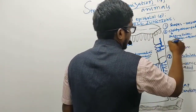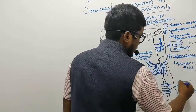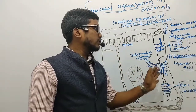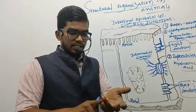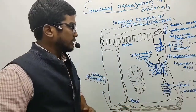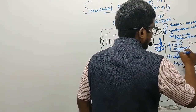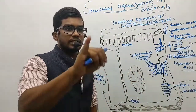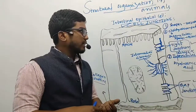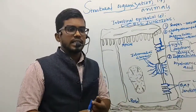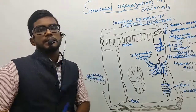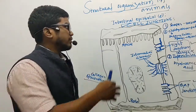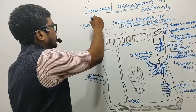In the intestinal cell, the tight cell junctions and gap cell junctions are clearly visible. Tight cell junctions prevent the leakage of substances from the cell. Adhering cell junctions cement the adjoining cells together, helping in proper attachment of the two cells with the help of structures called desmosomes.